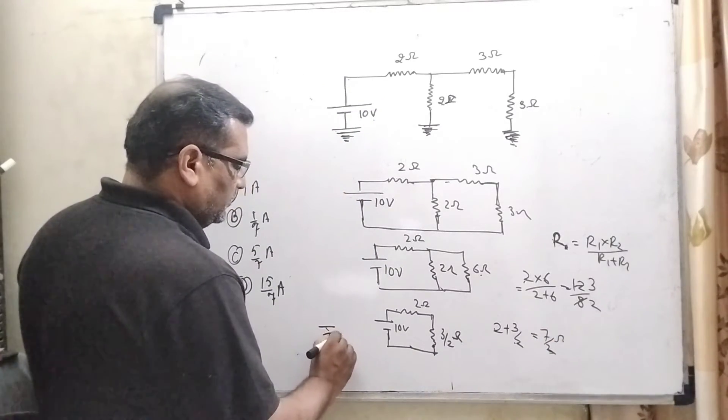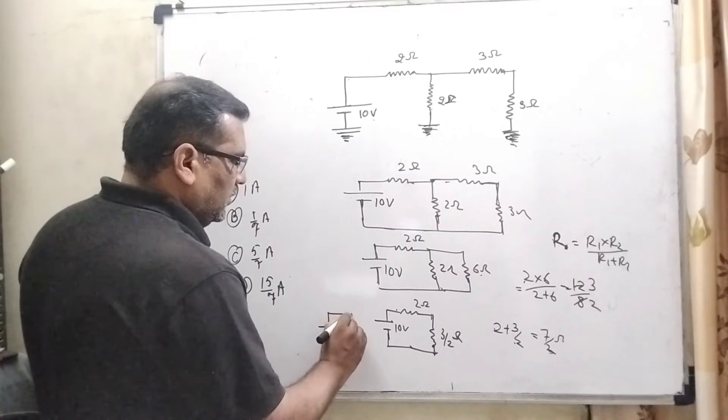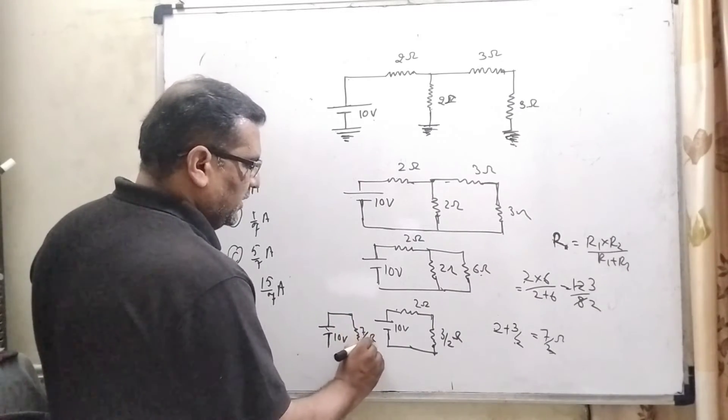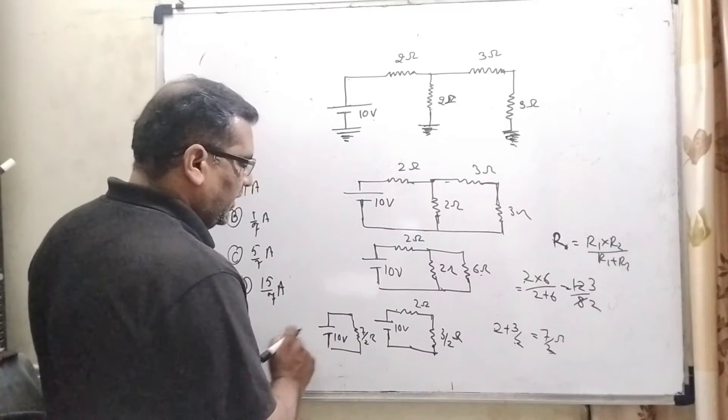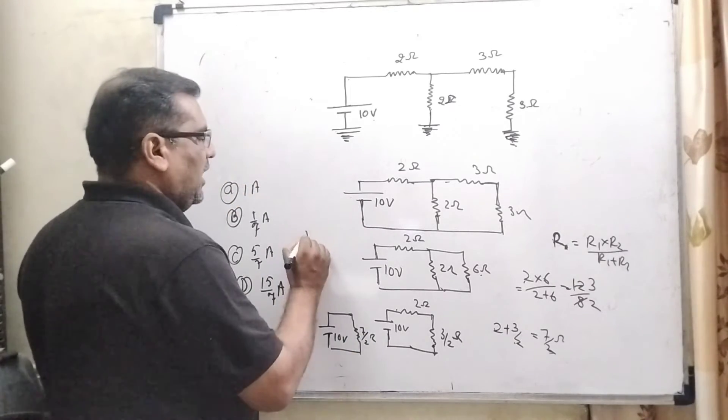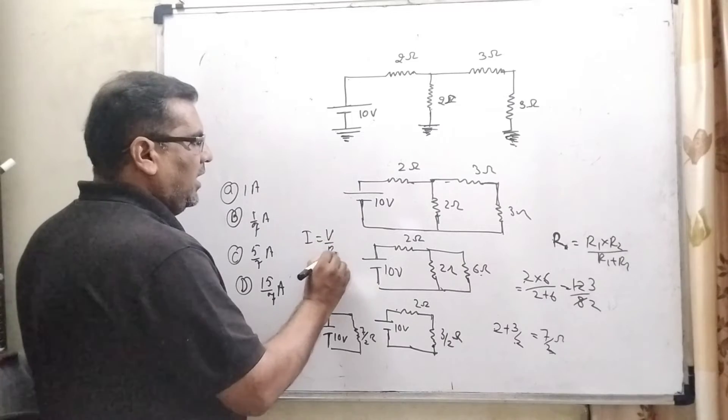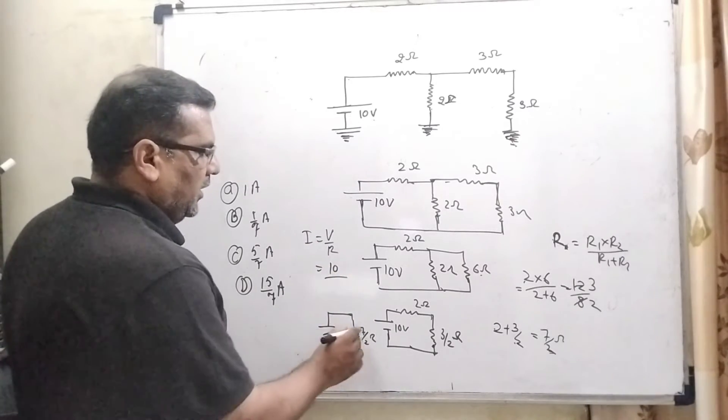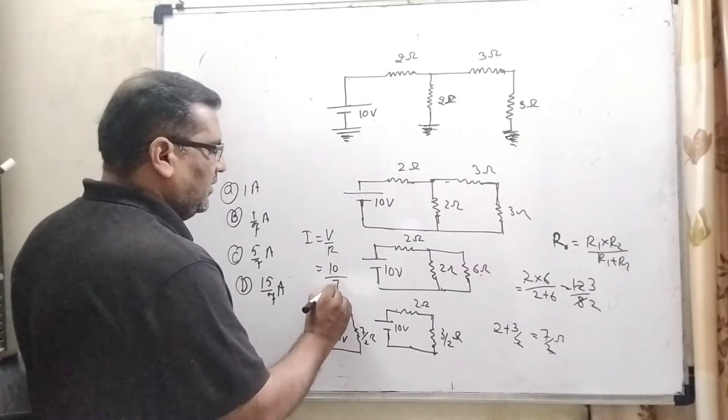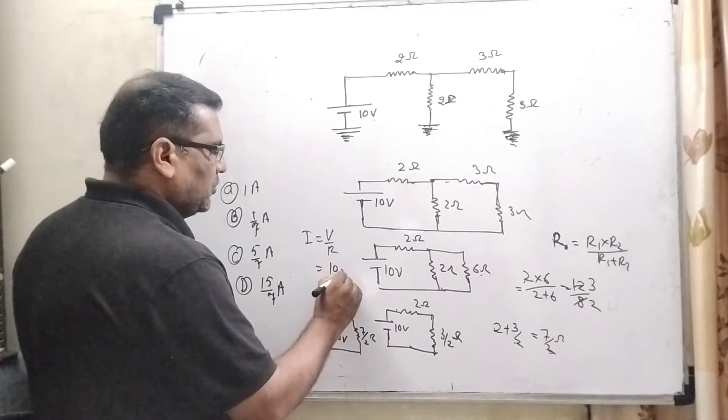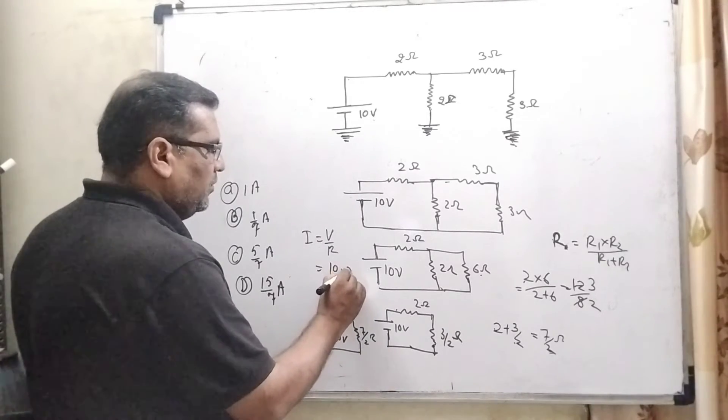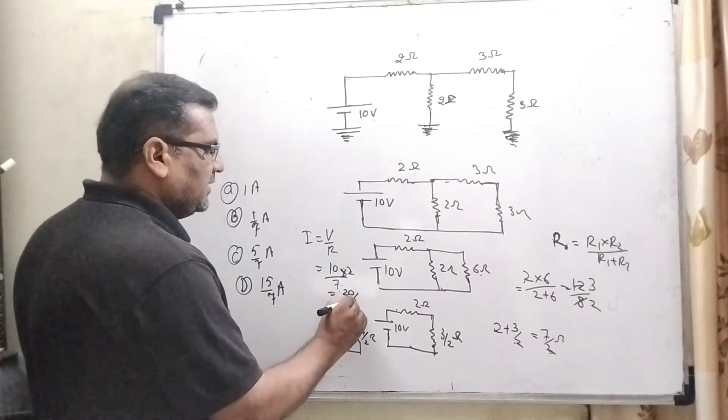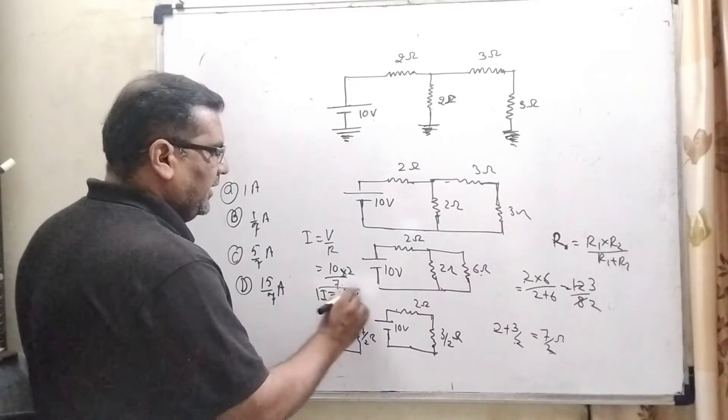So here, what is the equivalent? 7 by 2 ohm resistance. Now, we can find out net current. As we know that I equal to V by R. So what is V? Potential is 10 volt. And what is the equivalent resistance? 7 by 2. So this 2, which is in numerator, equals 20 by 7 current, net current.